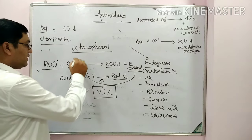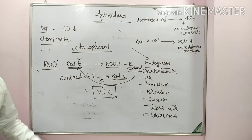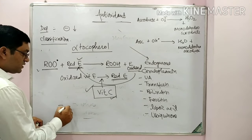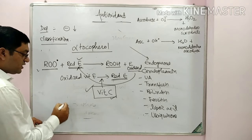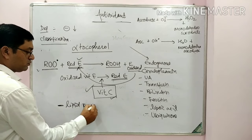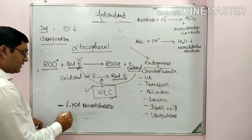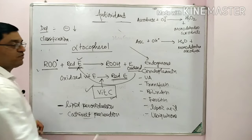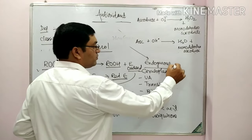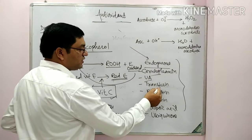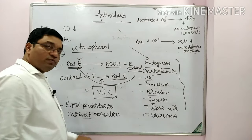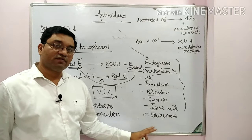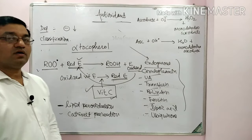Beta-carotene (pro-vitamin A) also acts as an antioxidant. Vitamin C along with vitamin E helps in prevention of lipid peroxidation and also helps in prevention of cataract, due to the antioxidant properties of vitamin E. Endogenous compounds acting as antioxidants include ceruloplasmin, uric acid, transferrin, bilirubin, ferritin, lipoic acid, coenzyme Q (a component of the electron transport chain), and phytochemicals from plants.